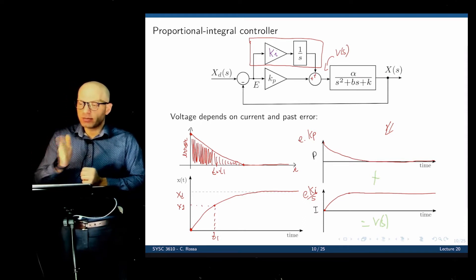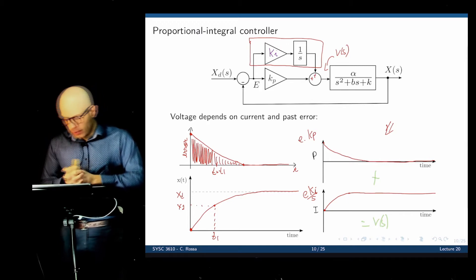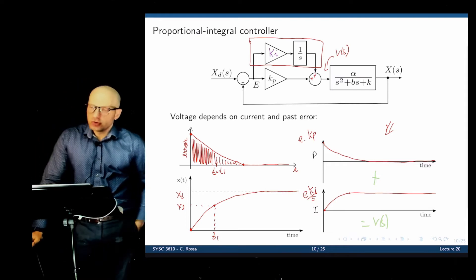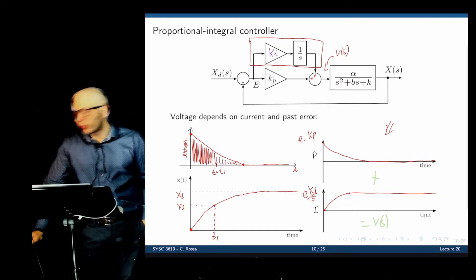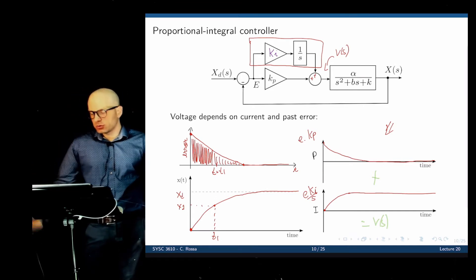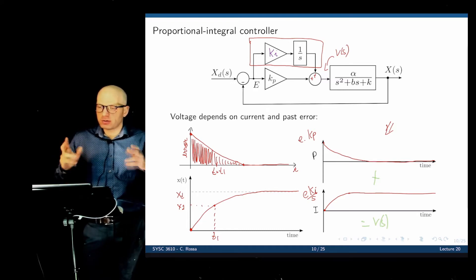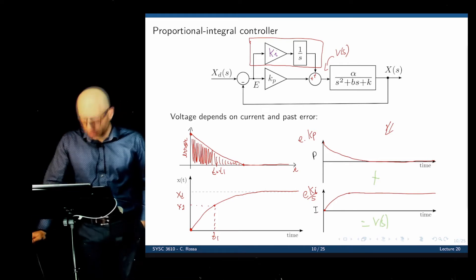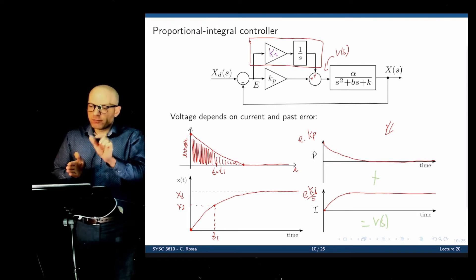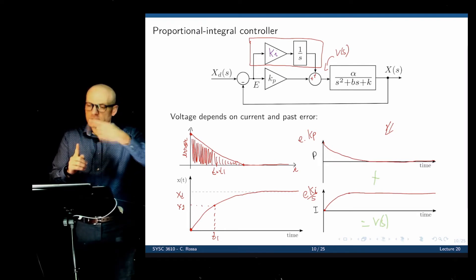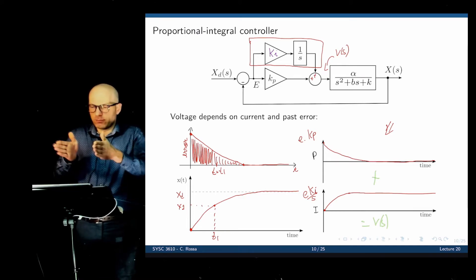The integral controller eliminates the steady state error, regardless of the value of KI. It will always build up enough voltage to hold the mass at the destination. If KI is very small, the integral builds up slowly, but it eventually accumulates enough. With a high proportional gain and small integral gain, the mass first jumps close to X0, then the integral controller slowly brings it the rest of the way.